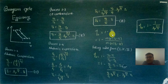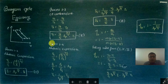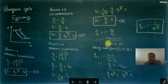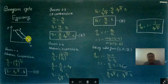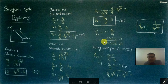Efficiency equals output divided by input, i.e., work done divided by heat supplied Q1. Since W equals Q1 minus Q2 (from the first law of thermodynamics), efficiency becomes (Q1 minus Q2) divided by Q1, which equals 1 minus Q2/Q1. Here Q2 is the heat rejected in process 4 to 1 at constant pressure, so Q2 equals mCp(T4 minus T1), and Q1 equals mCp(T3 minus T2).